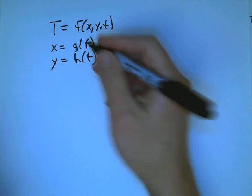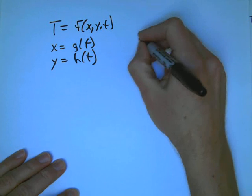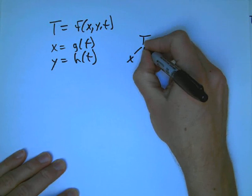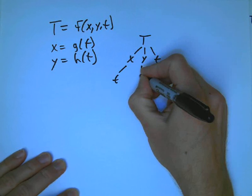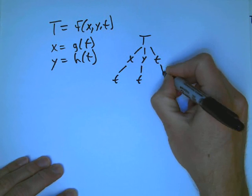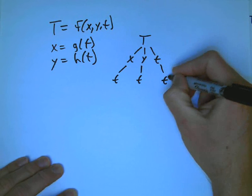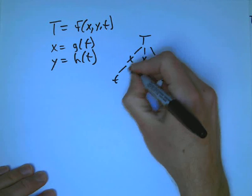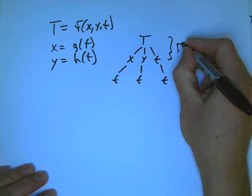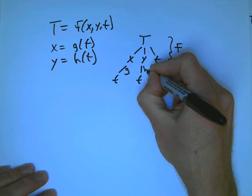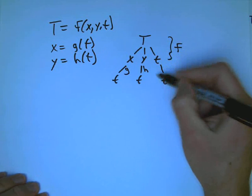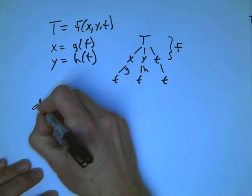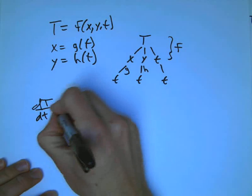As long as you have the distinction clear, it's not really that hard to set this up as a standard chain rule problem. We just draw our tree. T is a function of x, y, and t. X is a function of t, Y is a function of t, and T is a function of t as well, just by the identity function. It doesn't do anything. This is all f now, this is g still, this is h still, and this is the identity function. It really is a piece of the puzzle.